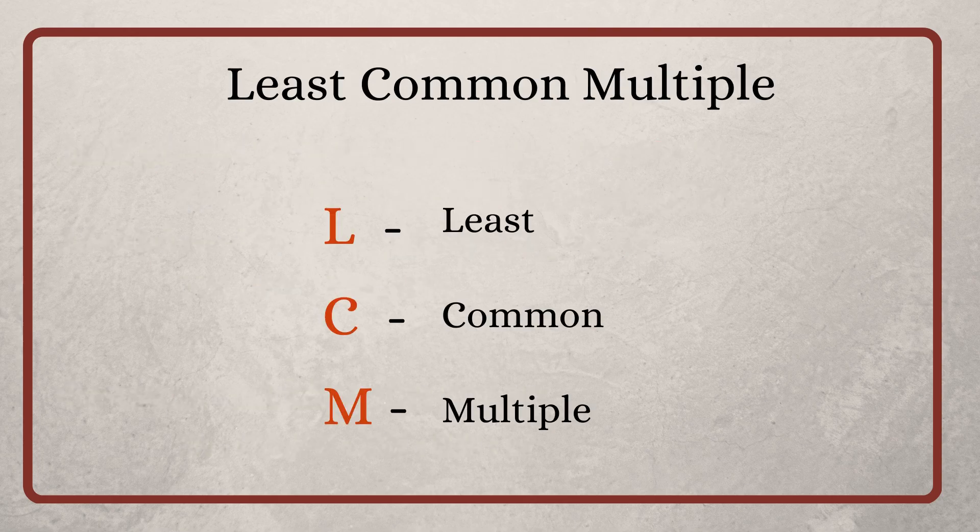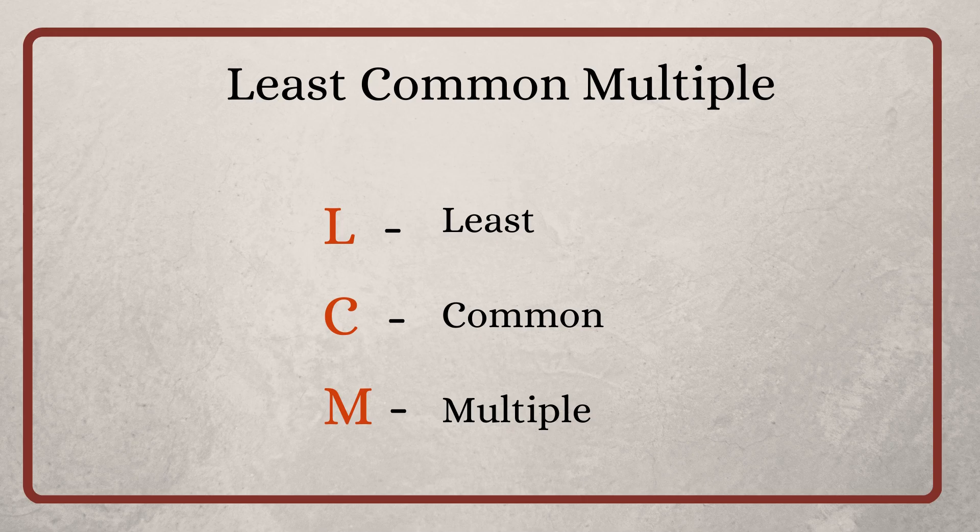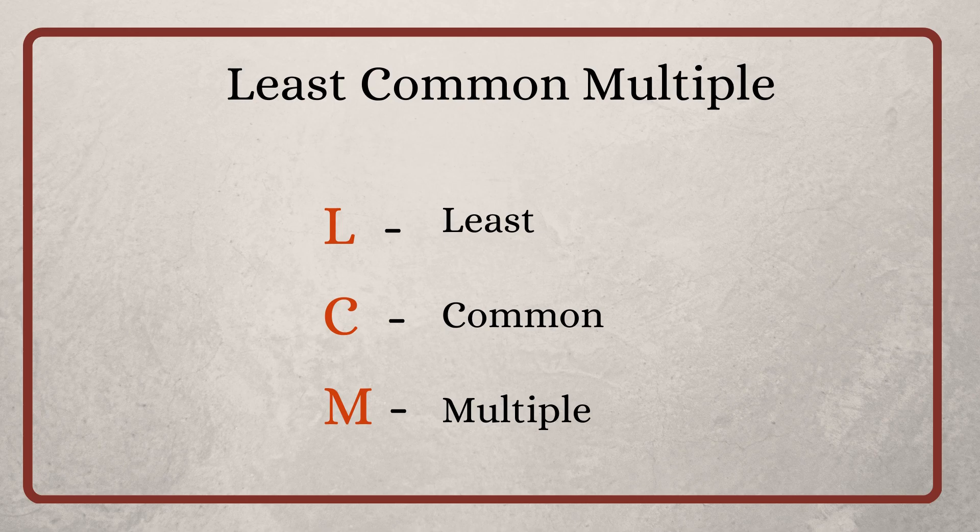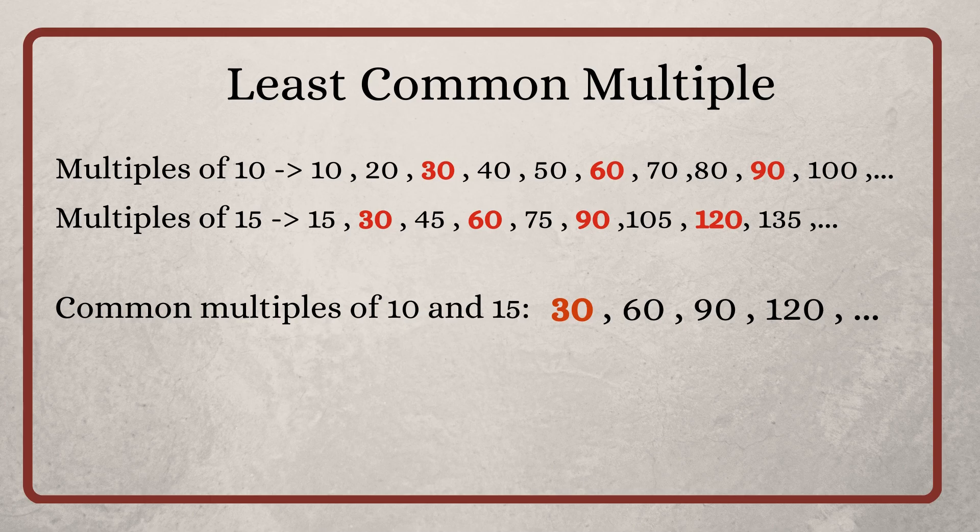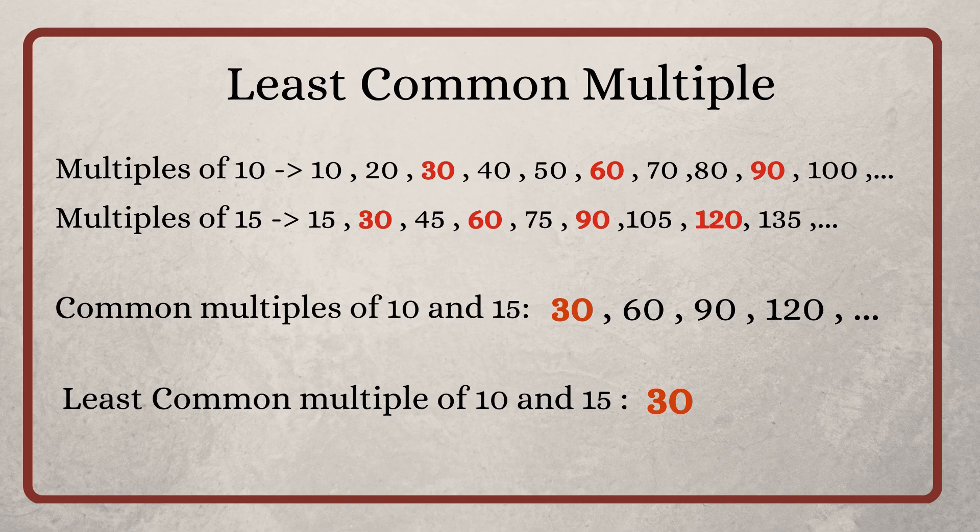Next let's move on to least common multiple. It is also called as LCM. As the name says, it is the smallest of the common multiples. In the example which we already saw, 30 is the smallest of all the common multiples. Thus, the LCM of 10 and 15 is 30.